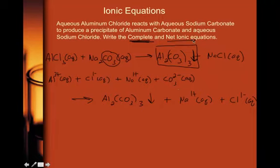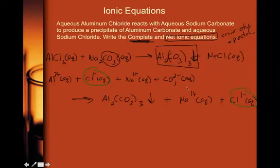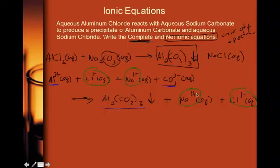To get to the net ionic equation, you simply cross out the spectator ions, because spectator ions don't do anything. On the left side we have Cl⁻ ion, and on the right side we also have Cl⁻ ion — nothing happened. We also have Na⁺ on both sides — nothing happened. They simply watched the reaction, which is why we call them spectator ions. They watched the aluminum and carbonate join together to form aluminum carbonate.